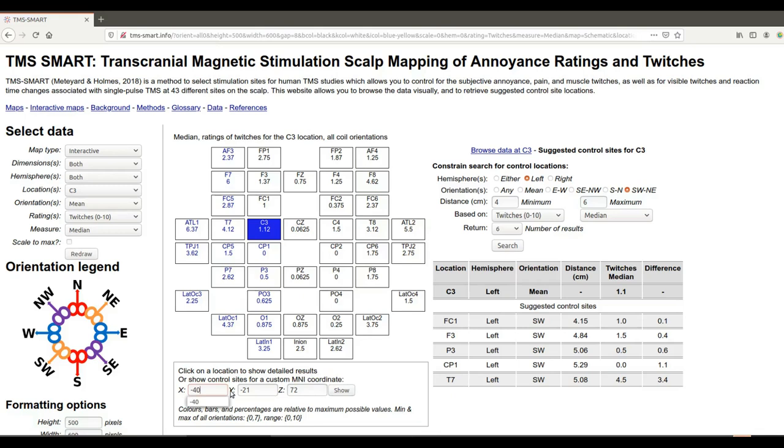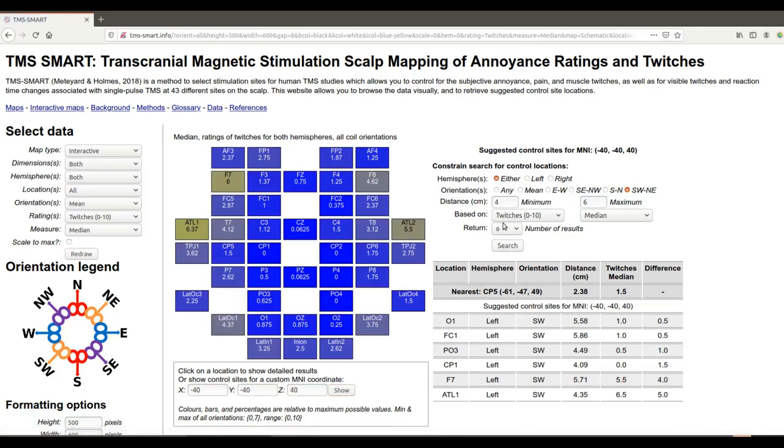You can instead put the coordinate down here, for example, minus 40 minus 40 40 is in the left inferior parietal lobe. Click that and then the map will recalculate and the control locations will recalculate according to your choices.